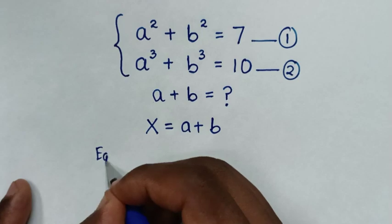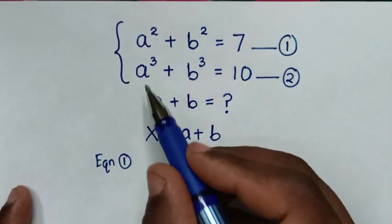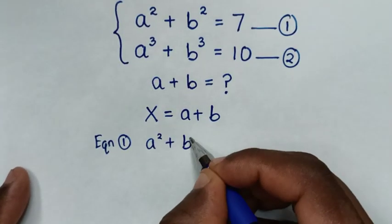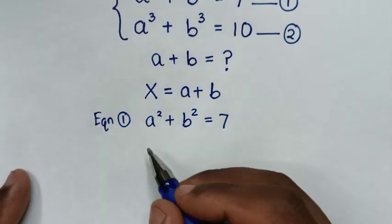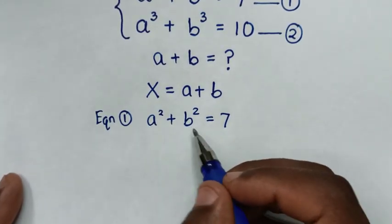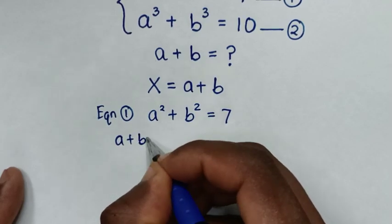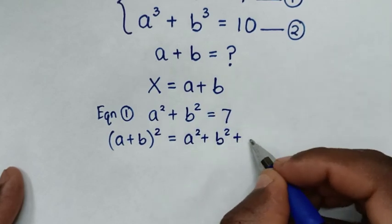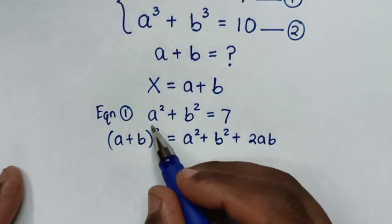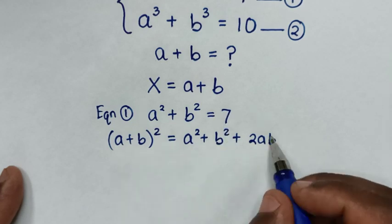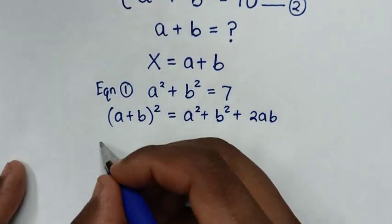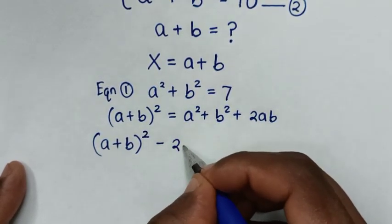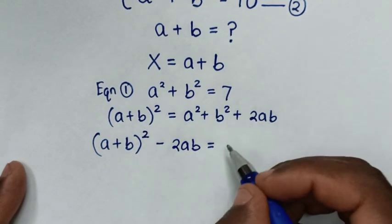Then from equation 1, which is a squared plus b squared is equal to 7. We will apply the algebraic rule so as to expand: a plus b, bracket, squared is equal to a squared plus b squared plus 2ab. So we rearrange: a plus b squared minus 2ab is equal to 7.